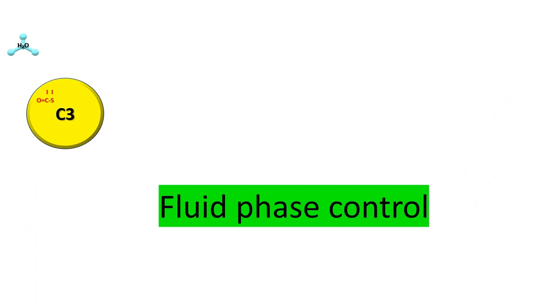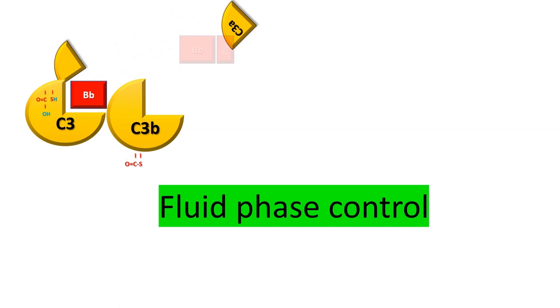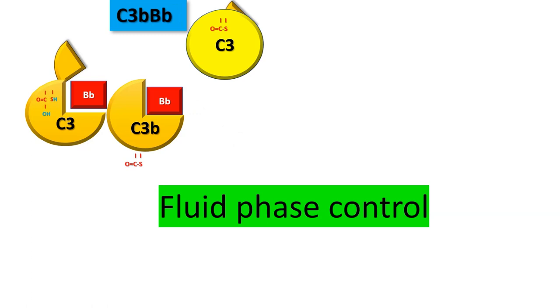The alternative pathway is composed of the fluid phase and the amplification loop. The first forms the fluid phase C3 convertase, C3H2OBB, which by hydrolysis of the internal thioester bond of C3, exposes the site for binding for B-factor, which is then cleaved and activated by factor D. It is an active convertase, but cannot bind to the surfaces, because the thioester bond is hydrolyzed. C3 is then converted into C3B and C3A fragment that acts like anaphylatoxin, assuring chemotaxis for phagocytic cells.